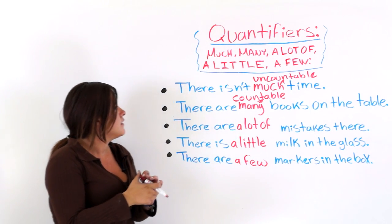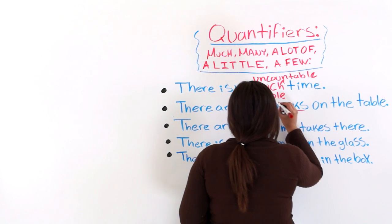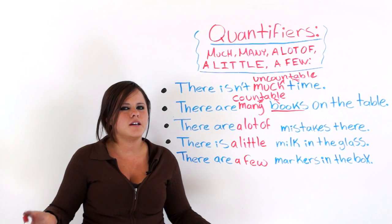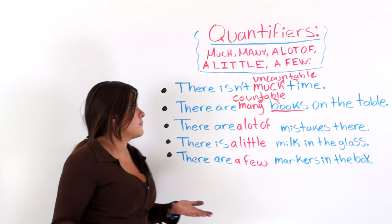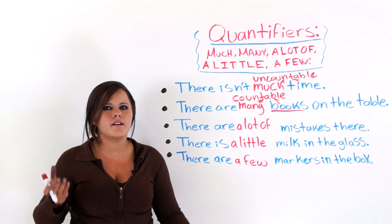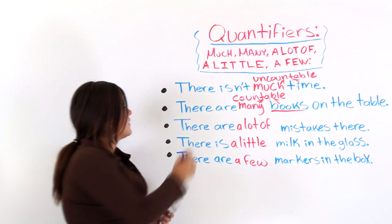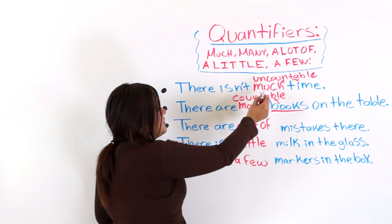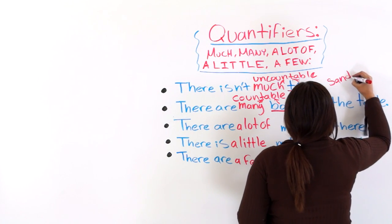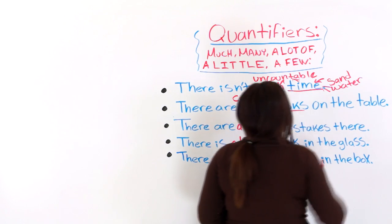There are many books on the table. Books — can you count them? Yes, you can count books. If you said words, there are many words — you can count them too. But if you talk about sand: 'there are many sand' — no, right? Because you don't know the exact quantity; you can't split them into units. That means they are not countable. There are many books — countable. There isn't much time — time is uncountable. You could say there isn't much sand, there isn't much water.